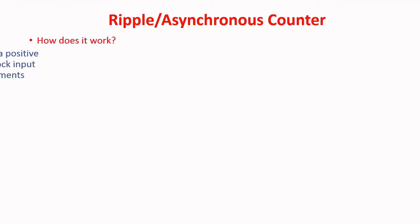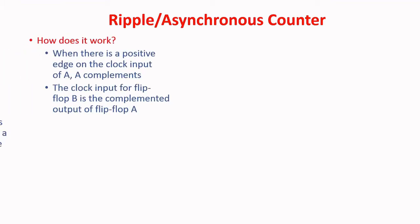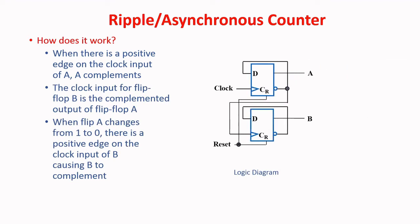Ripple or Asynchronous Counters — how does it work? This is the logic diagram of asynchronous or ripple counters. When there is a positive edge on the clock input of A, A complements. The clock input for flip-flop B is the complemented output of flip-flop A. When flip-flop A changes from 1 to 0, there is a positive edge on the clock input of B, causing B to complement.